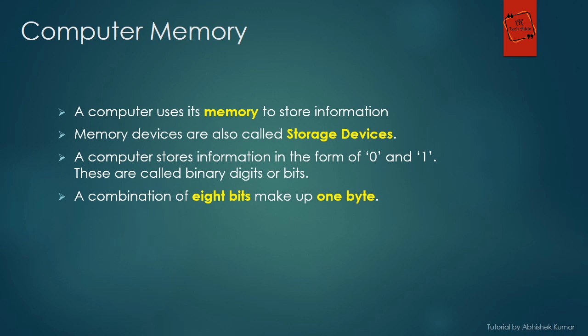Since a computer does not understand human language, it stores all its information in the form of zeros and ones, and that's called binary digits — or simply called bits. Each letter, number, or symbol has its own unique binary code, which is very difficult to understand for us. But thankfully, we have some components in the computer to interpret our language into the computer's binary digits.